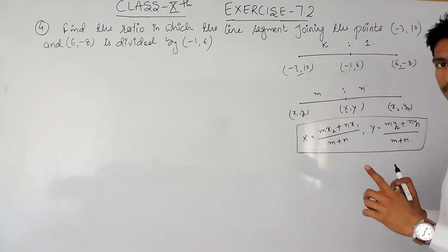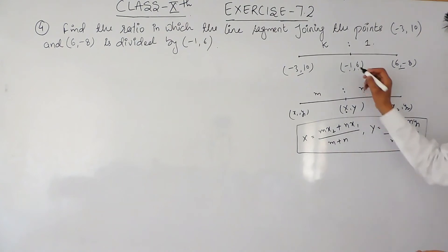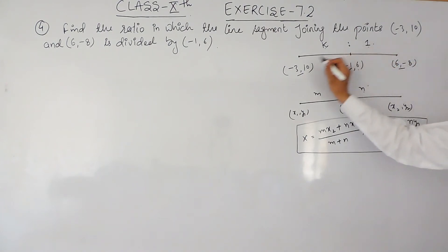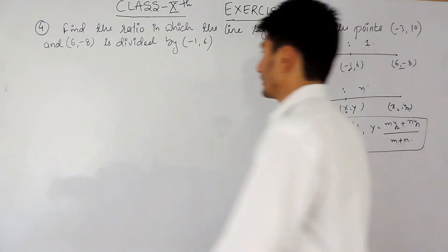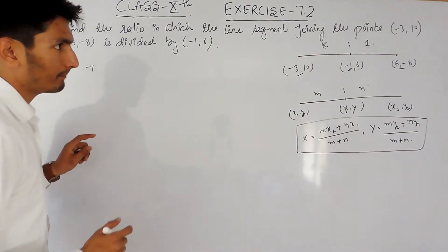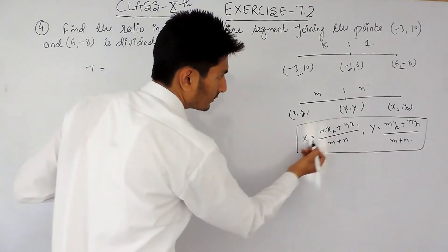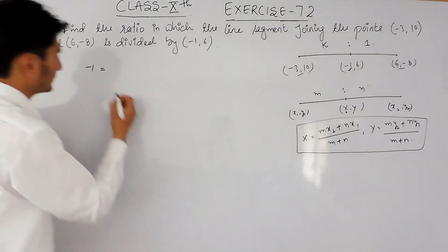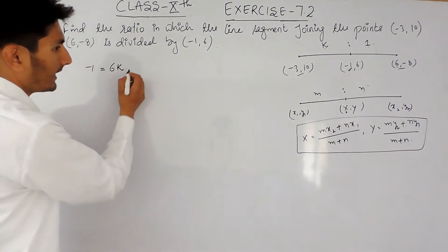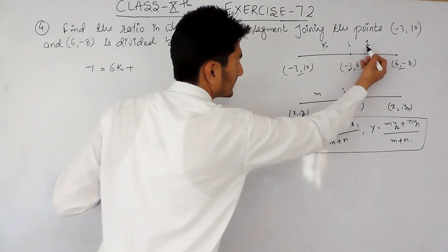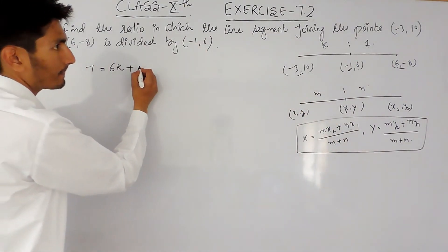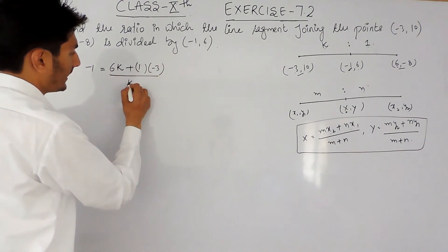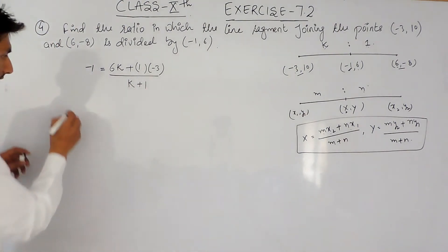Using the section formula, to find the x-coordinate of the dividing point, you multiply m with x2 and n with x1, then divide by m plus n. The x-coordinate of our dividing point is -1. Our m is k, so m times x2 gives 6k, plus n (which is 1) multiplied by x1 (which is -3), giving -3. In the denominator we have k plus 1.